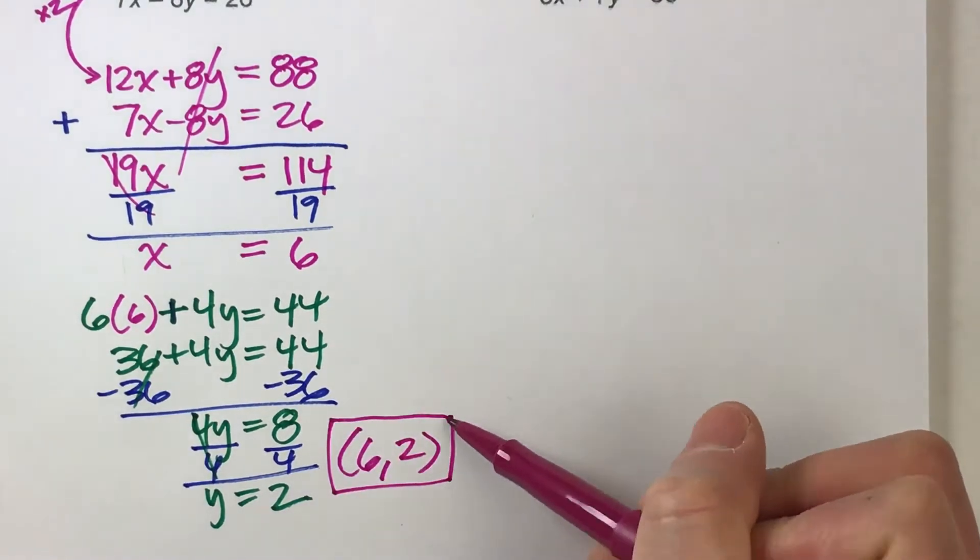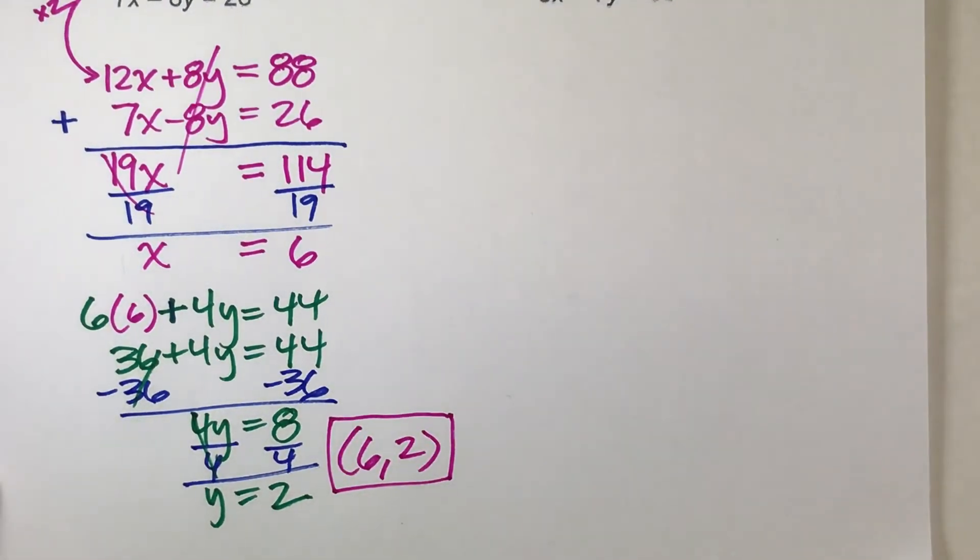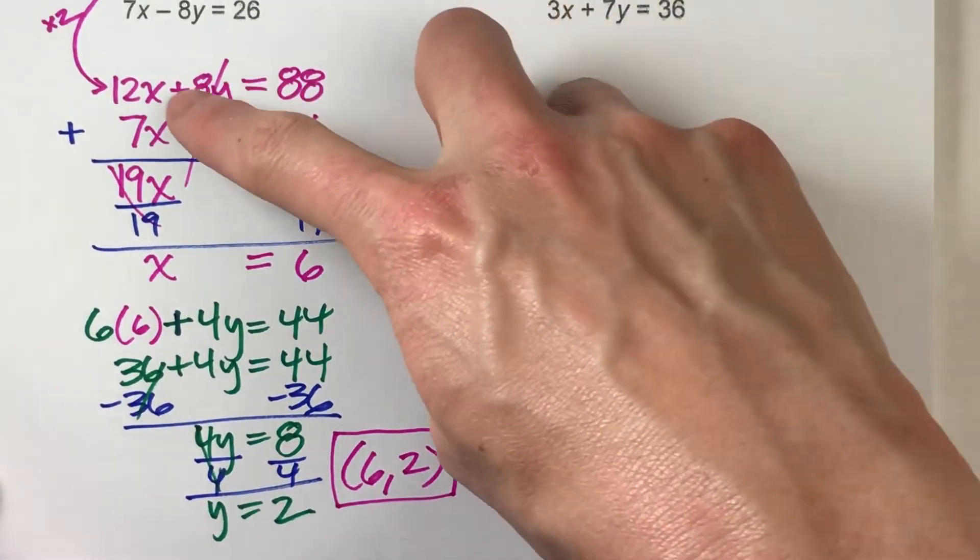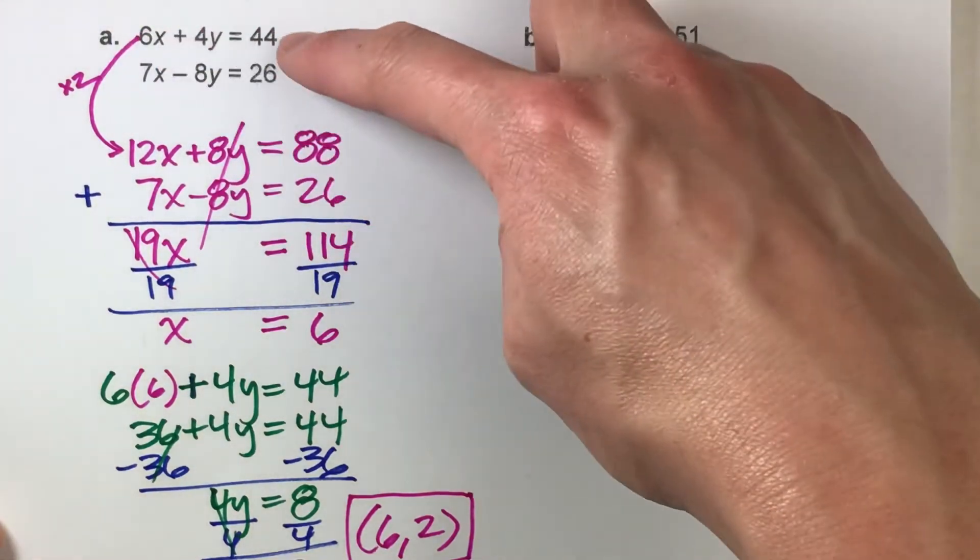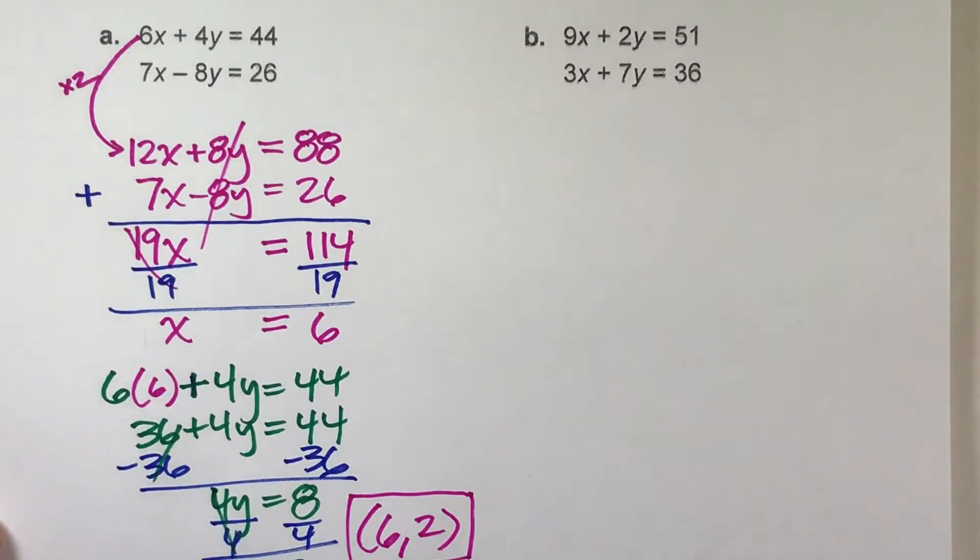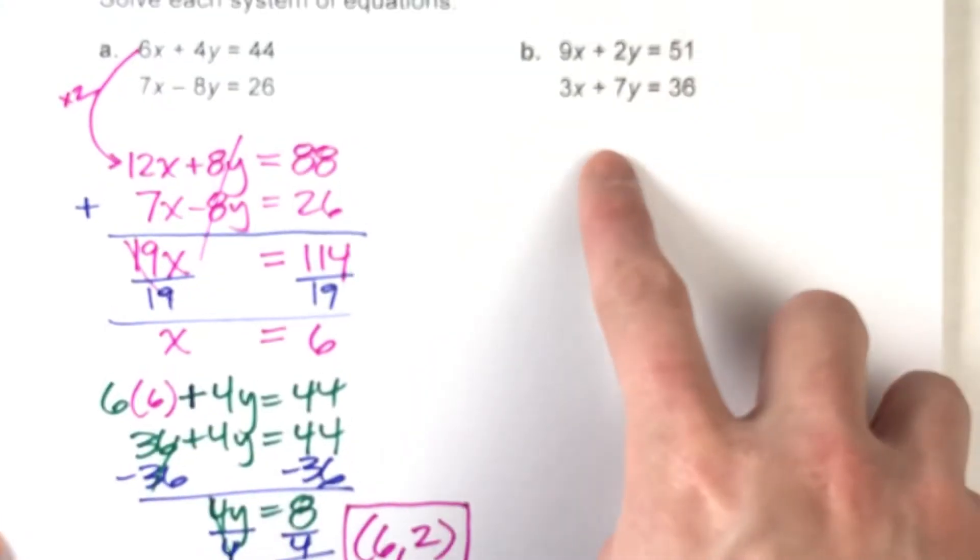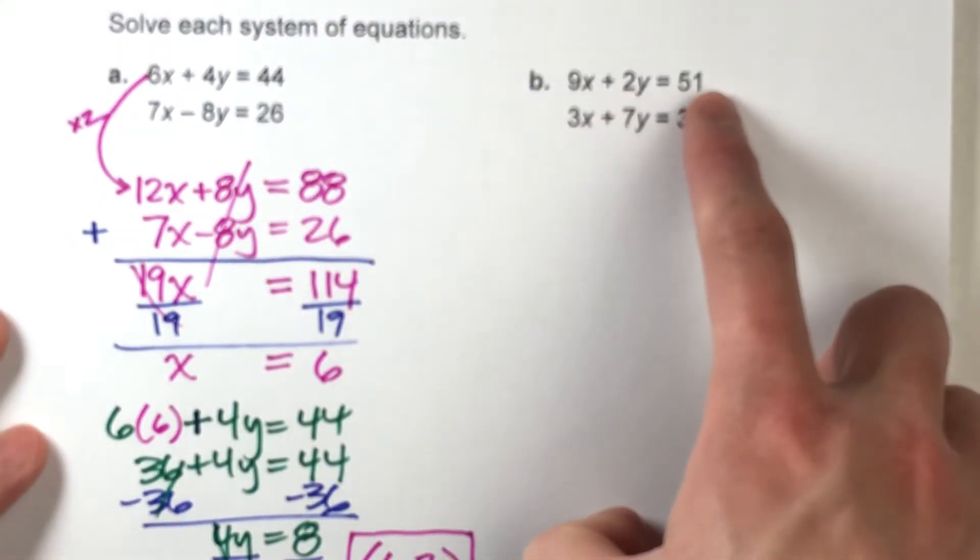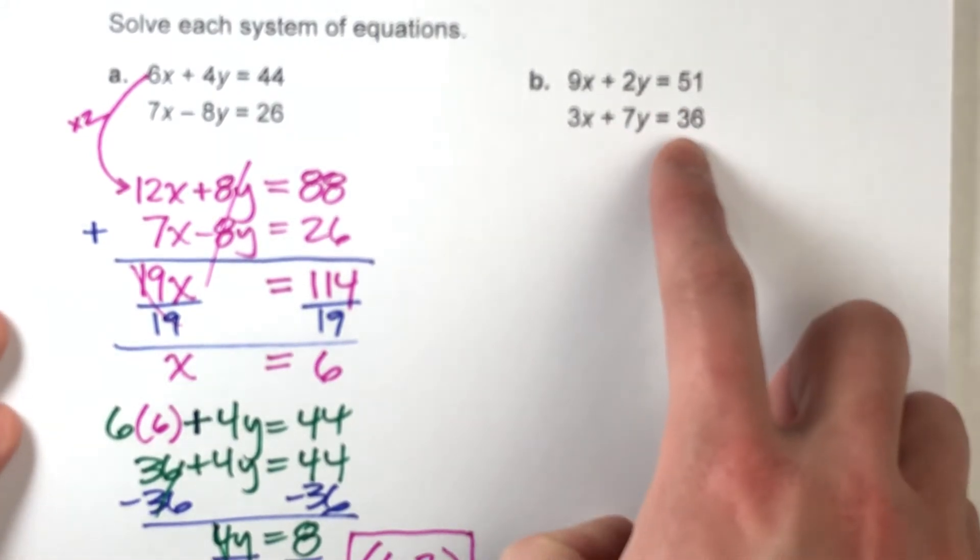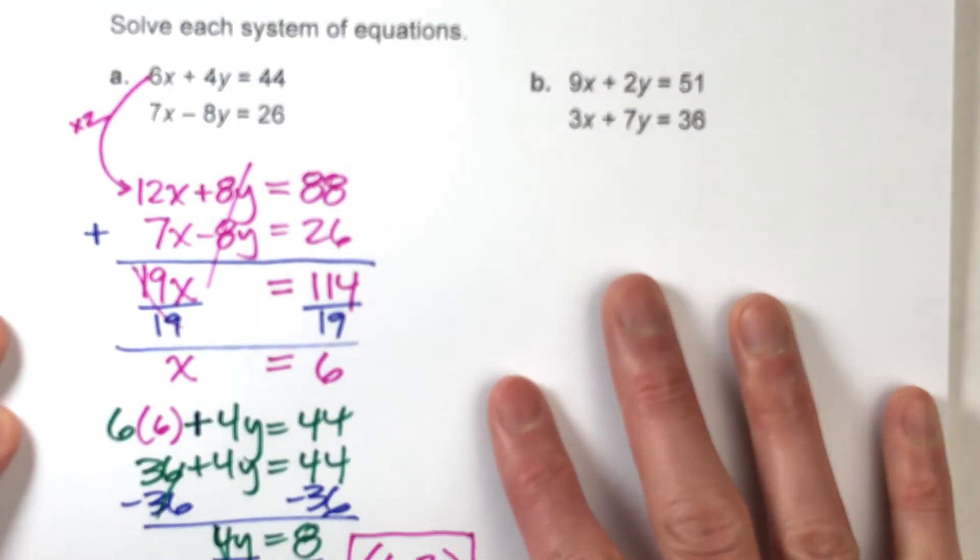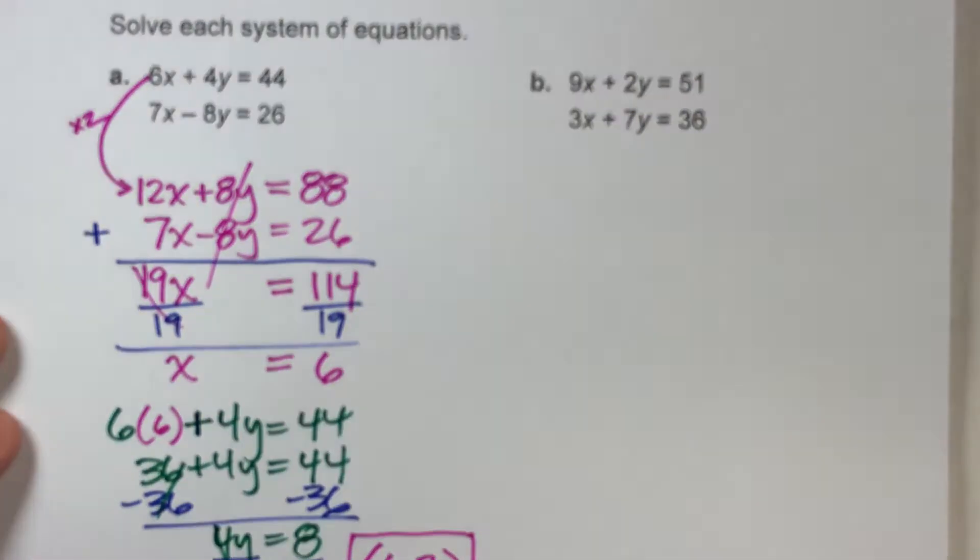But the key to this problem really was making sure that either the X's or Y's matched up, and by multiplying that first equation by 2, I accomplished that. Let's see one more example. We've got 9X plus 2Y equals 51, 3X plus 7Y equals 36. Now one of the hardest parts about doing this is finding out what to multiply your equations by so that they do match up.